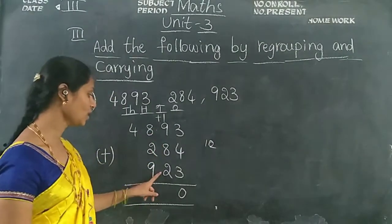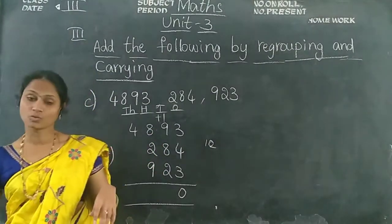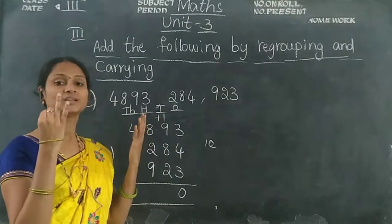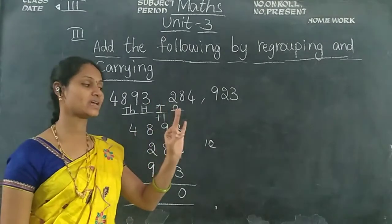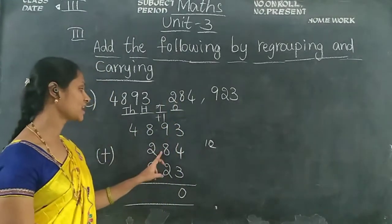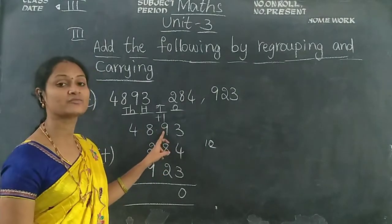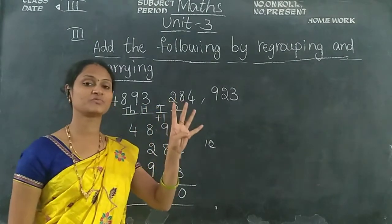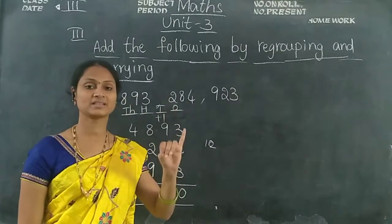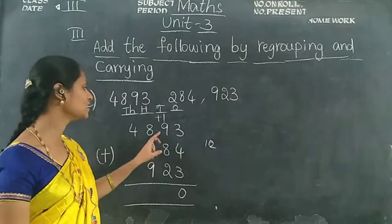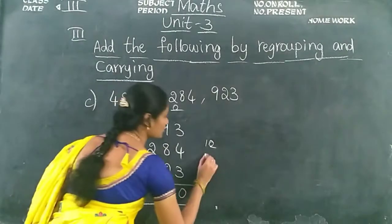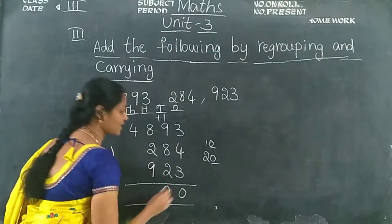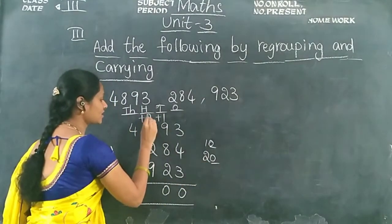Now we add the tens place. Keep 2 in your mind, open 8 fingers: 2 after 3, 4, 5, 6, 7, 8, 9, 10. Keep 10 in your mind, open 9 fingers: 10 after 11, 12, 13, 14, 15, 16, 17, 18, 19. Then 19 plus 1 equals 20. So 20 is a 2-digit number — write 0 in the tens place and carry 2 forward to the hundreds place.